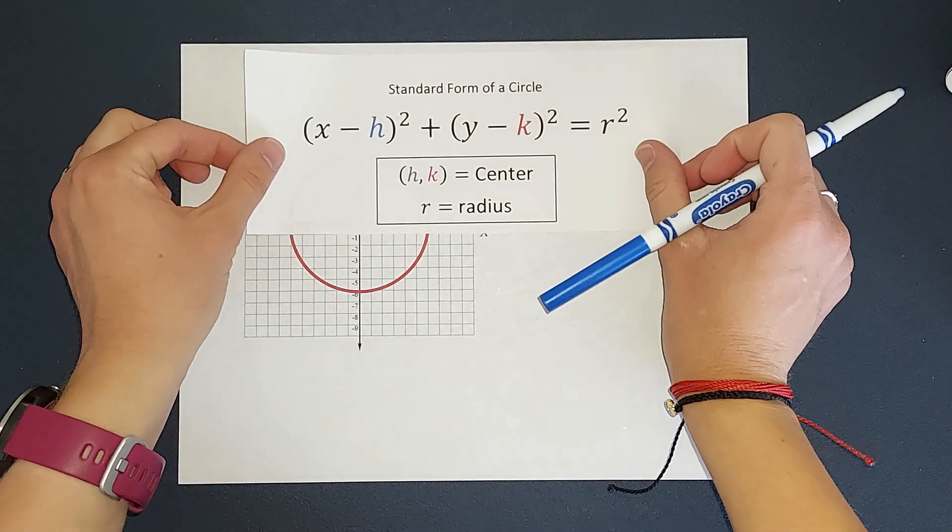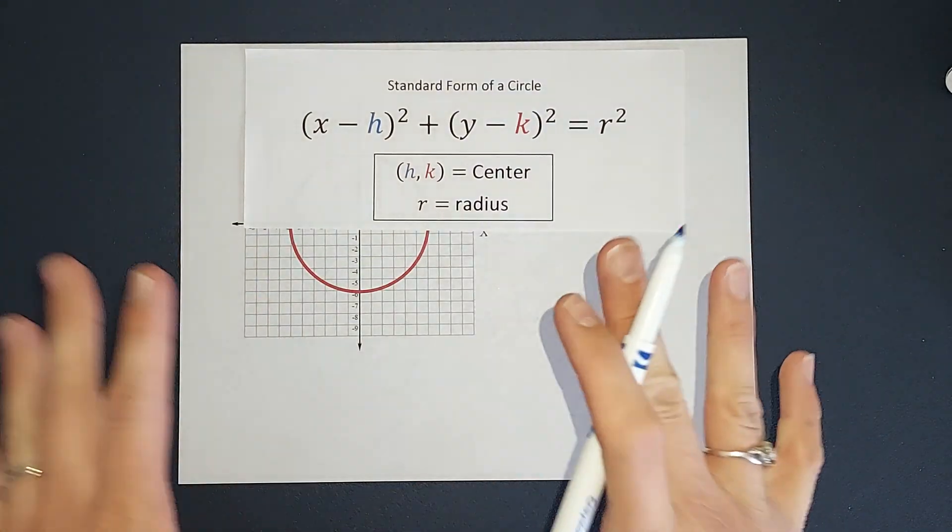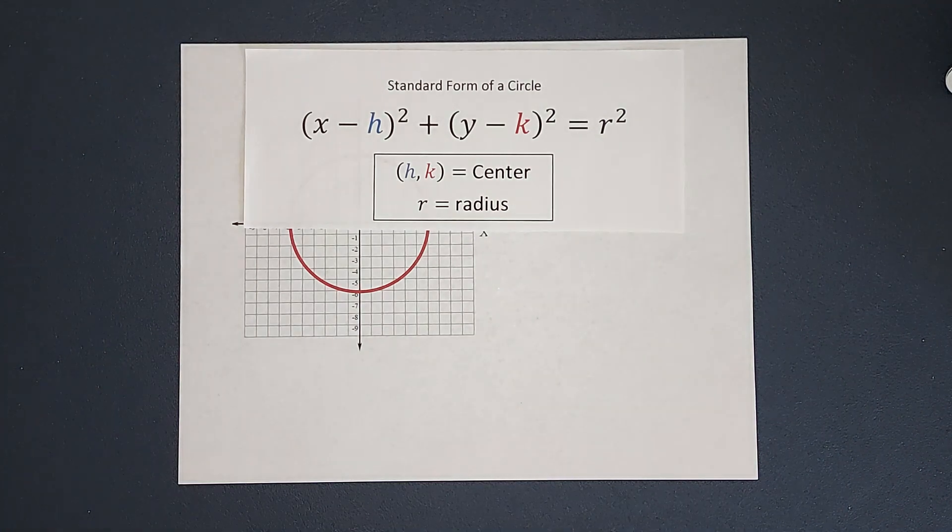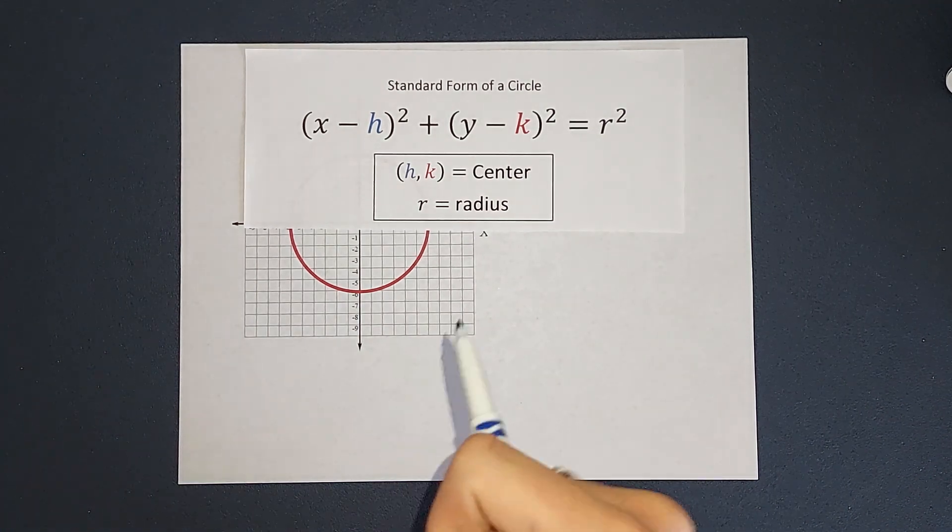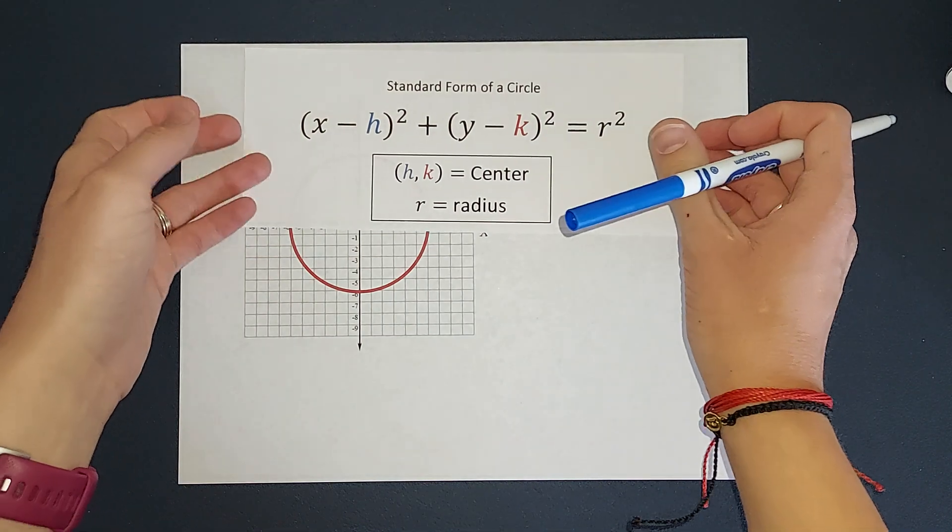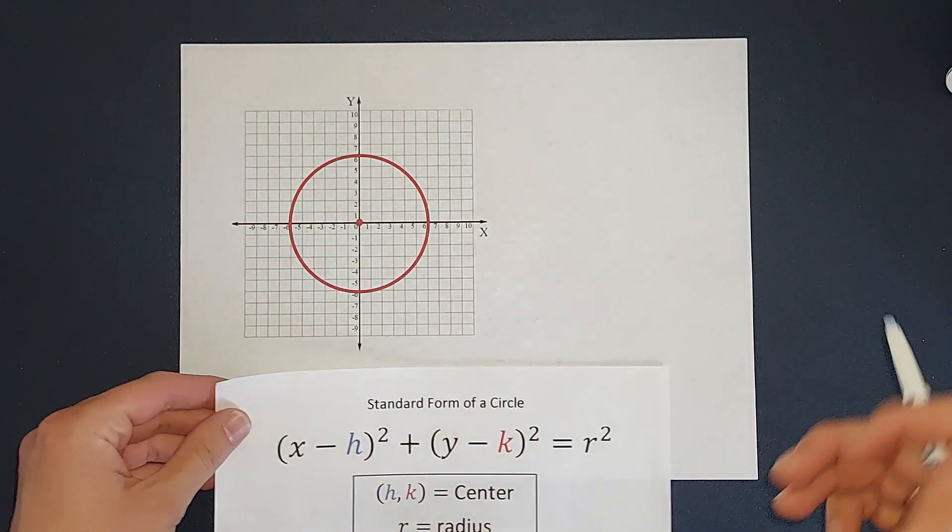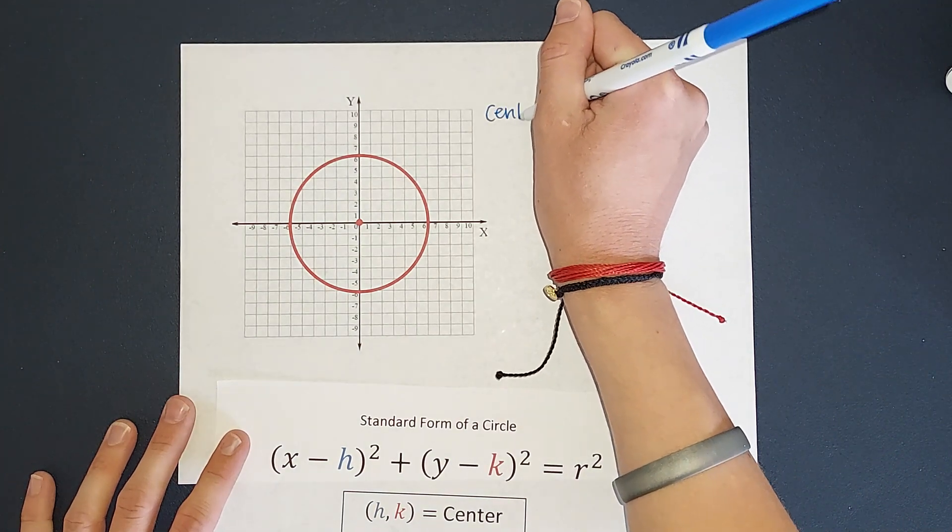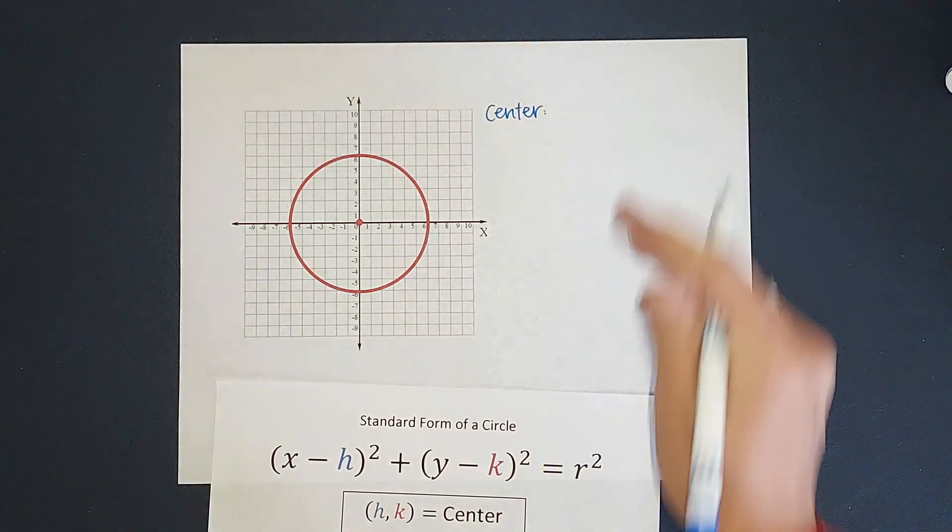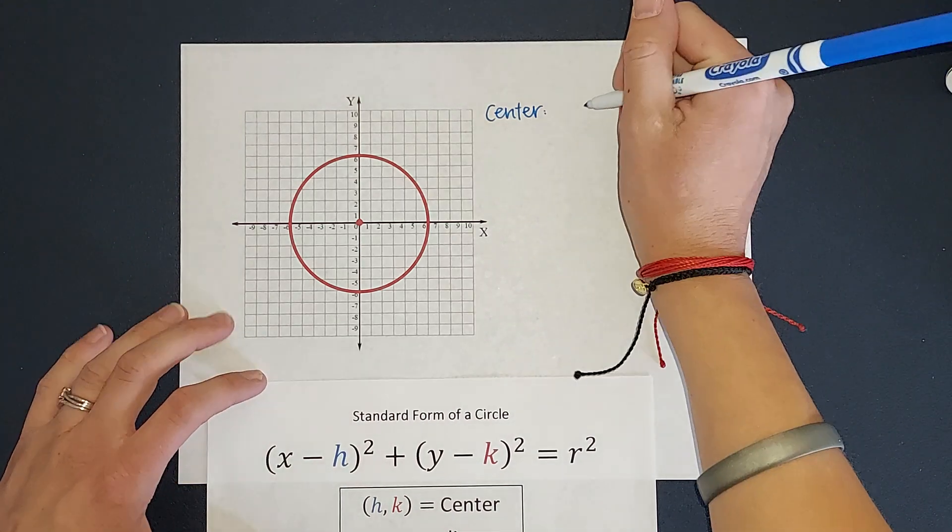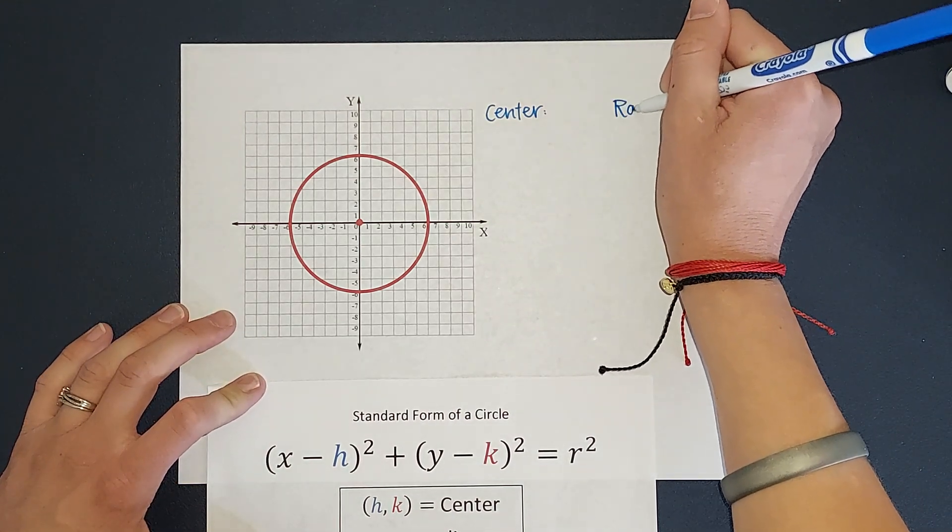What we need is our standard form of a circle. This we can easily fill in if we can identify our center and radius, which we can do with this graph, right? So I need to know what my center is and my radius is, and then I can fill in my standard form of a circle.